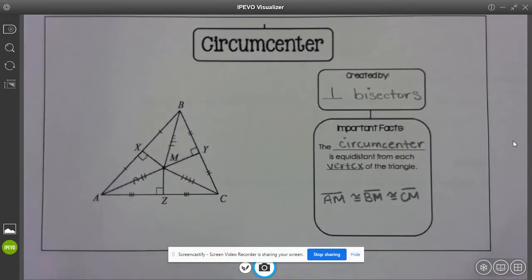So circumcenter, you should see perpendicular bisectors on the outside of your triangle, and that's how we know that it is a circumcenter.